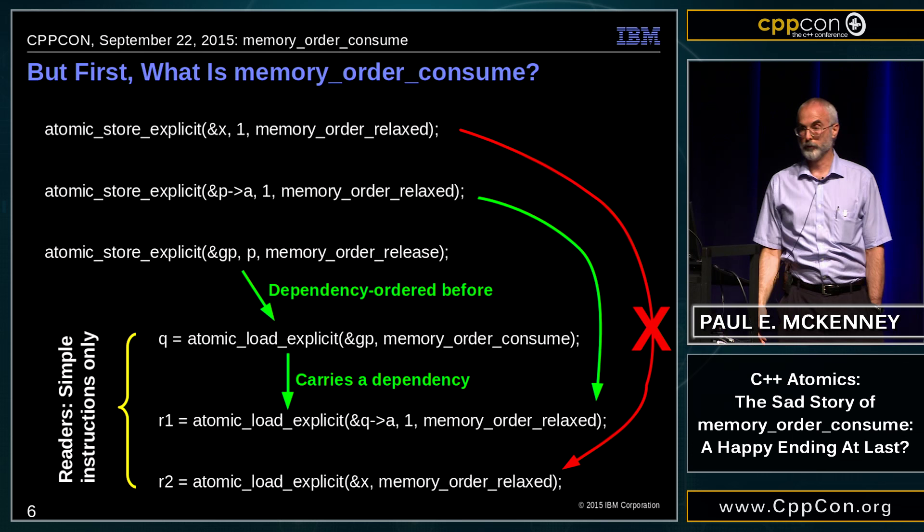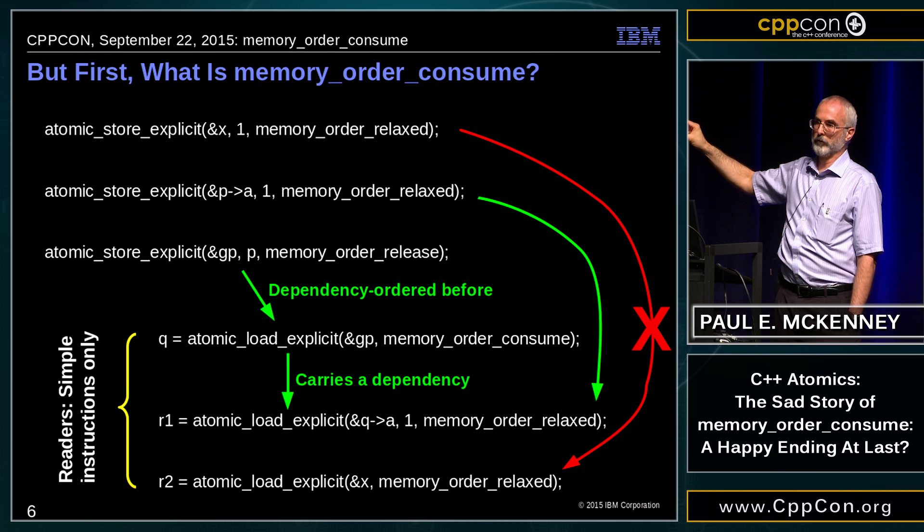We have to pay a little penalty on the update side — we need a memory barrier to make the release work. But on the reader side, we just issue normal instructions and things work nicely, with the exception of DEC Alpha. That's been discontinued for a while, so we handle that otherwise. This is the use case: linked data structures, especially read-intensive ones, using very simple, cheap instructions and getting very high performance as a result.